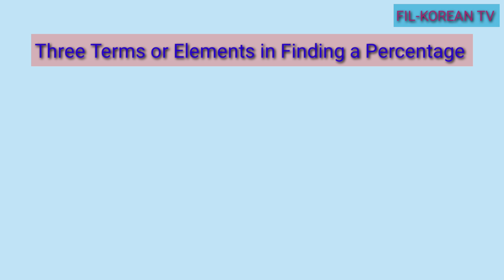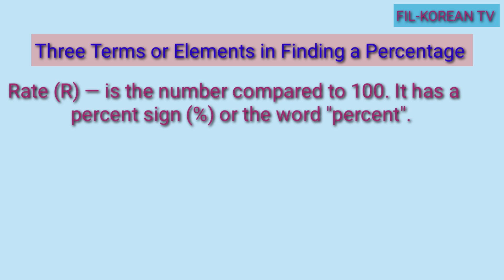First, let us know the three terms or elements in finding a percentage. First is the rate. Rate is the number compared to 100. It has a percent sign or the word percent. Ang rate ay number na ikinukumpara sa 100 at ito ay mayroong percent sign o may word na percent.